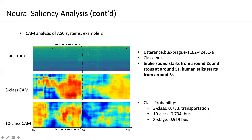In another example from the bus scene, the brake sound starts from around 2 seconds and stops at around 5 seconds. Our ASC model does focus more on this part because it helps identify the scene as bus. In general, from these results we can say that our ASC models do focus on acoustic events that have discriminative information. Specifically, the models pay more attention to acoustic segments containing specific acoustic events, such as bird sounds for the park, car or horse sounds from street traffic, or brake sounds from the bus.